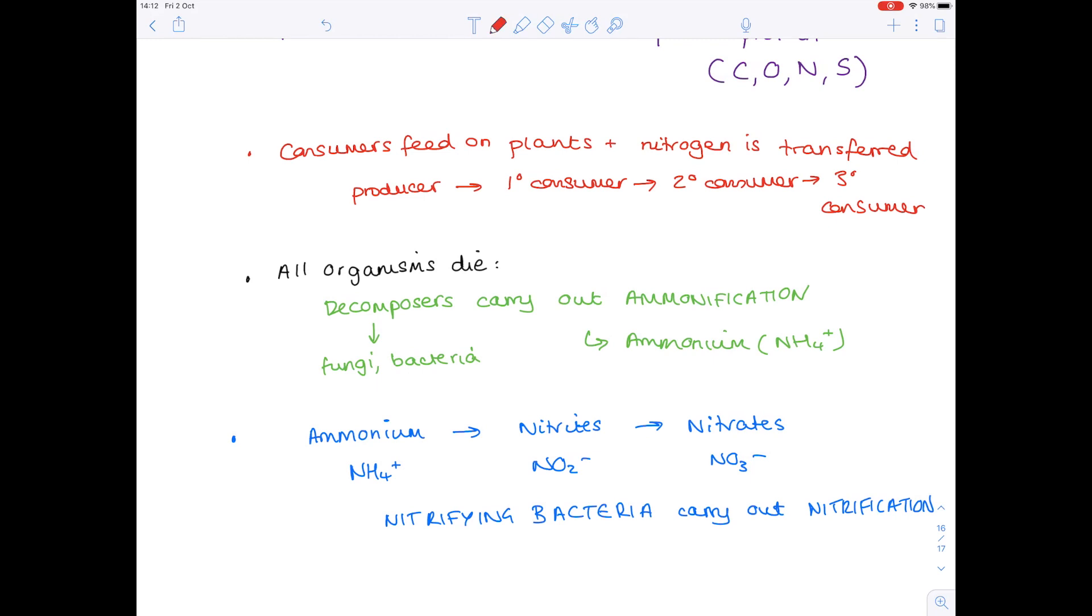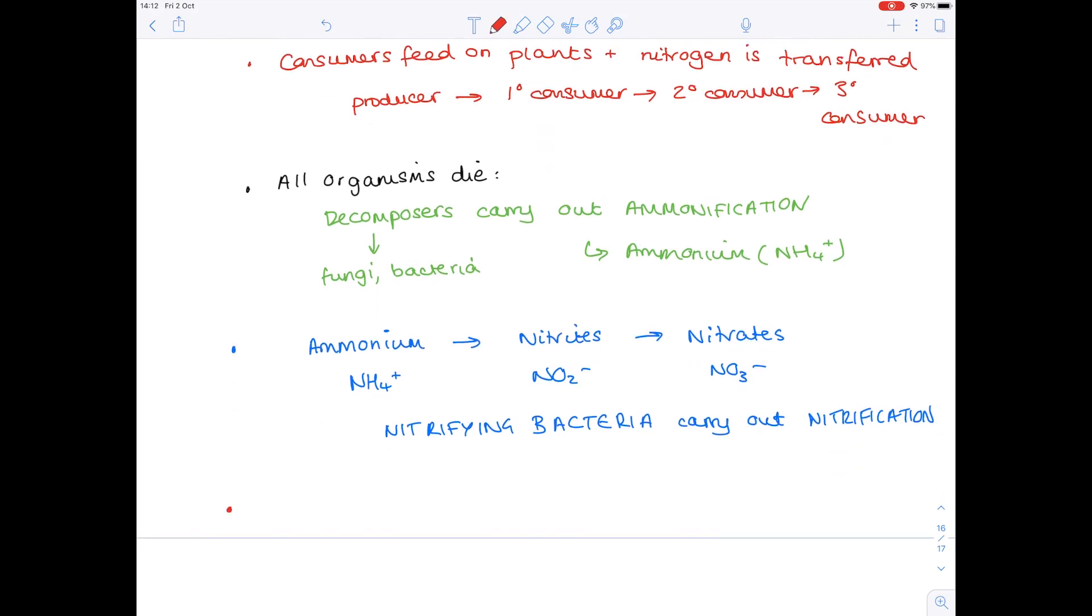Now frustratingly, also present in the soil are annoying little bacteria which will take those nitrates and convert them into nitrogen gas in the air. And that's really annoying because we already said how important these nitrates are for increasing the fertility of the soil so that the plants can make plenty of plant protein. However, you do need to know their names, and as you might guess, they're called denitrifying bacteria and they carry out denitrification.